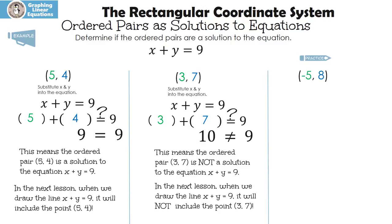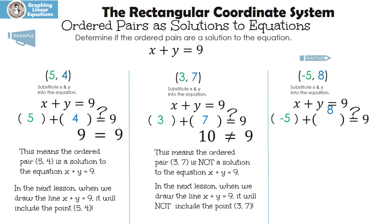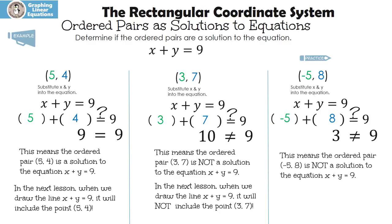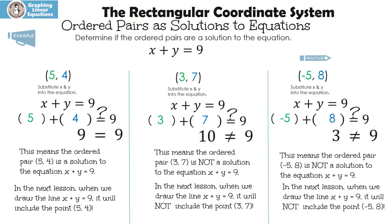Here's one for you to practice. You're going to pause the video, figure out if negative five, eight is a solution, then press play to check. Let's see how you did. We're going to substitute negative five for x and eight for y into the equation. Negative five plus eight is three, and three does not equal nine. This means the ordered pair negative five, eight is not a solution to the equation x plus y equals nine. In the next lesson, when we draw the line, it will not include the point negative five, eight.